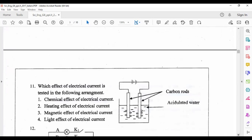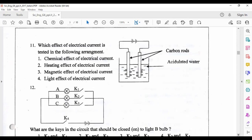Question number 11: which effect of electric current is tested in the following arrangement? By using two carbon rods we are giving electricity to the liquid, that is acidulated water, and we are making some changes in that liquid. That change is a chemical change, so we call it chemical effect of electrical current.